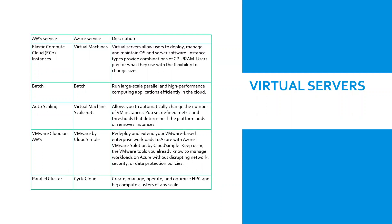Azure Web Jobs allow you to create scheduled or continuously running background tasks. Auto scaling in Microsoft Azure is handled by two services: Virtual Machine Scale Sets and App Service Auto Scale. Virtual Machine Scale Sets allow you to deploy and manage an identical set of virtual machines, with the number of instances able to auto scale based on performance needs. App Service Auto Scale provides the capability to auto scale Azure App Service solutions.